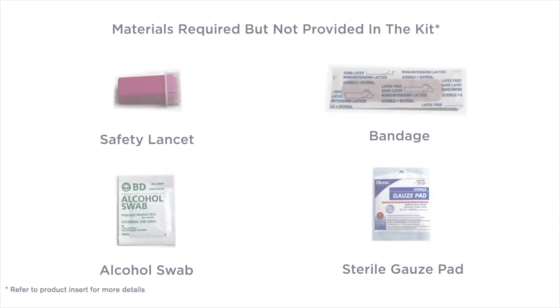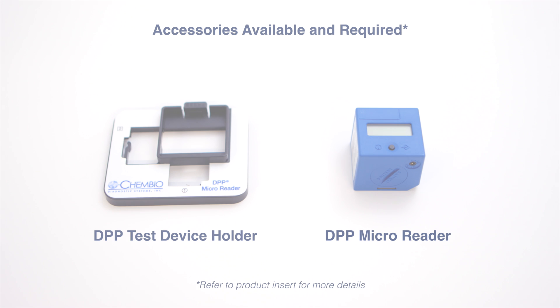First, you should familiarize yourself with the contents of the kit. In addition to the items provided in the kit, you will need the following. The ChemBio DPP microreader is required to read the results of the DPP HIV Syphilis Test.